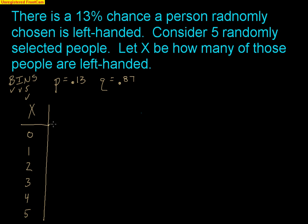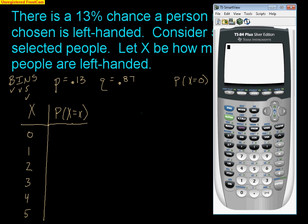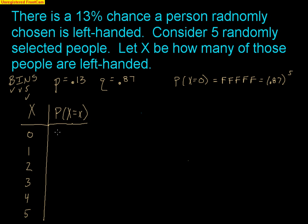The point of this video is to find the probabilities of these things occurring. There are two easy ones — let's knock them out. The first is nobody left-handed: X equals zero. The only way that can happen is five straight failures, so that's 0.87 raised to the fifth. Using the calculator, 0.87 to the fifth is 0.4984.